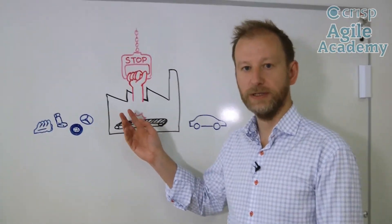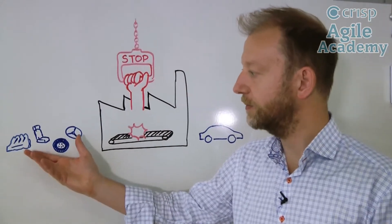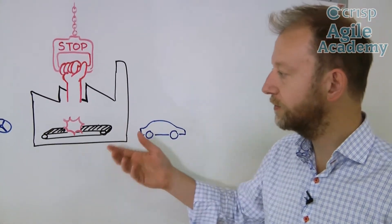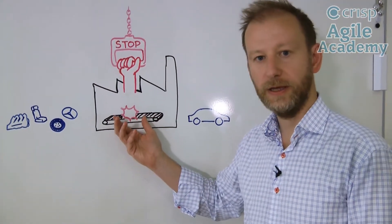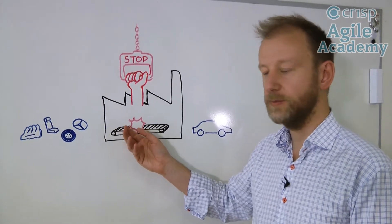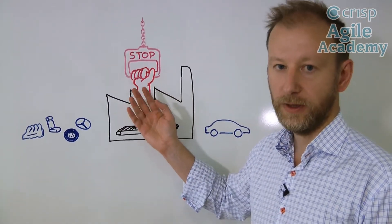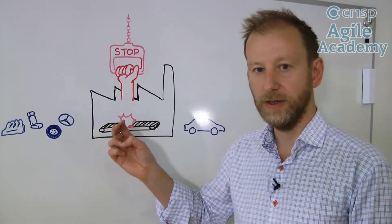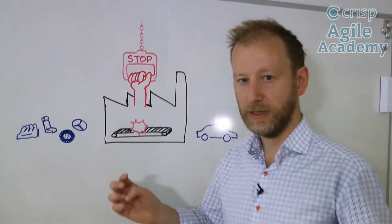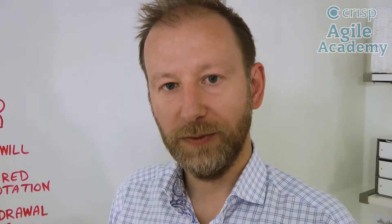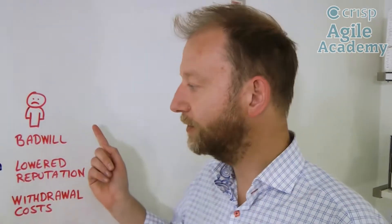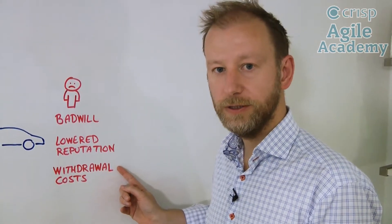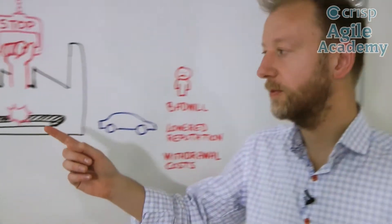So imagine a car manufacturer. A car manufacturer has several assembly lines. In one end you have the parts of the car that go in, and in the other end the whole car comes out. So if a problem happens during the assembling of the car, the team has the possibility of stopping the line by pulling a handle. They know that if they deliver a car with bugs to the market, that will come back and bite them. The bad will from customers, the lowered reputation of the brand, and the withdrawal costs of all the cars is so much bigger than to just fix the problem when it occurs.